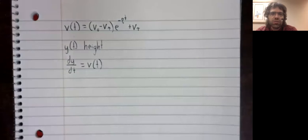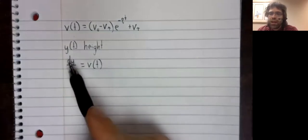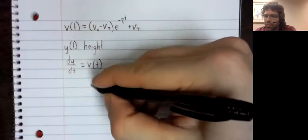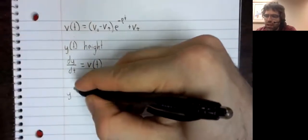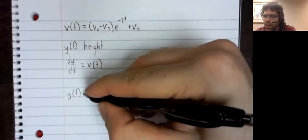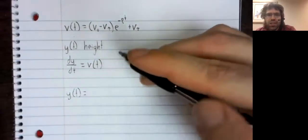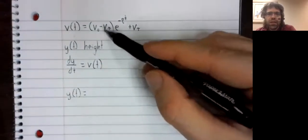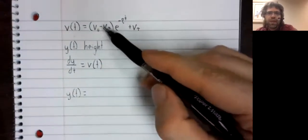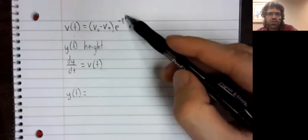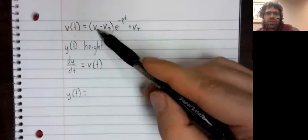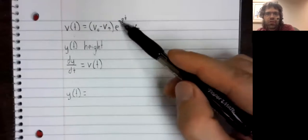Velocity is derivative of position. So we can find y without separation of variables or anything of the sort. We will simply integrate velocity. And everything here except time is a constant: v sub zero and v sub tau and rho.